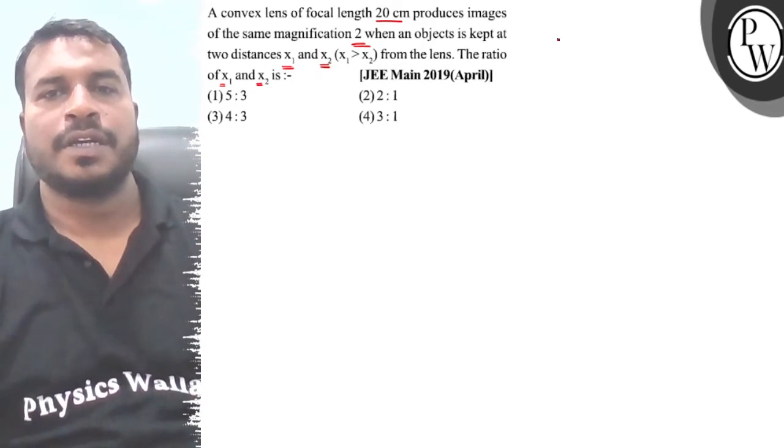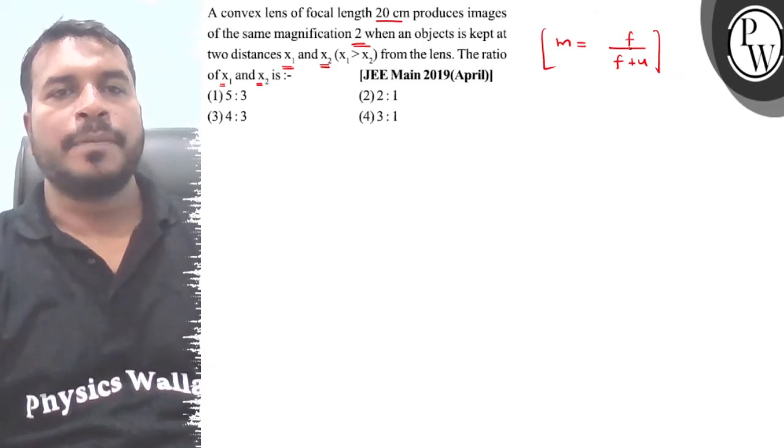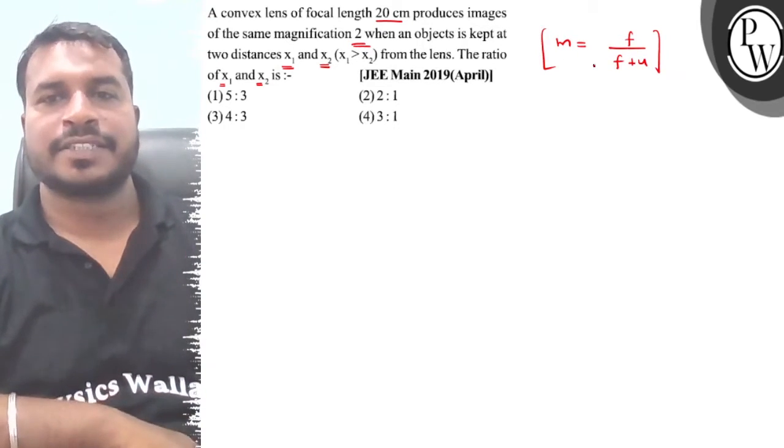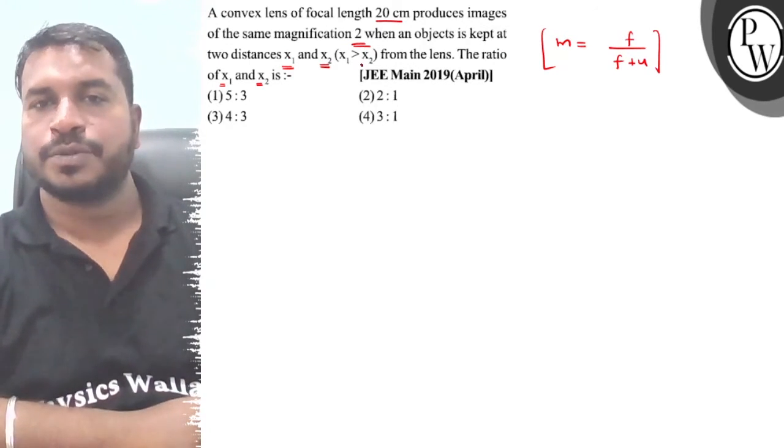So what can we do in this case? The first thing we can say is that if we talk about magnification, we will have a formula that is f upon f plus u. So this is the formula. Now look, there are different distances between x1 and x2. If we talk about both, x1 is more than x2.